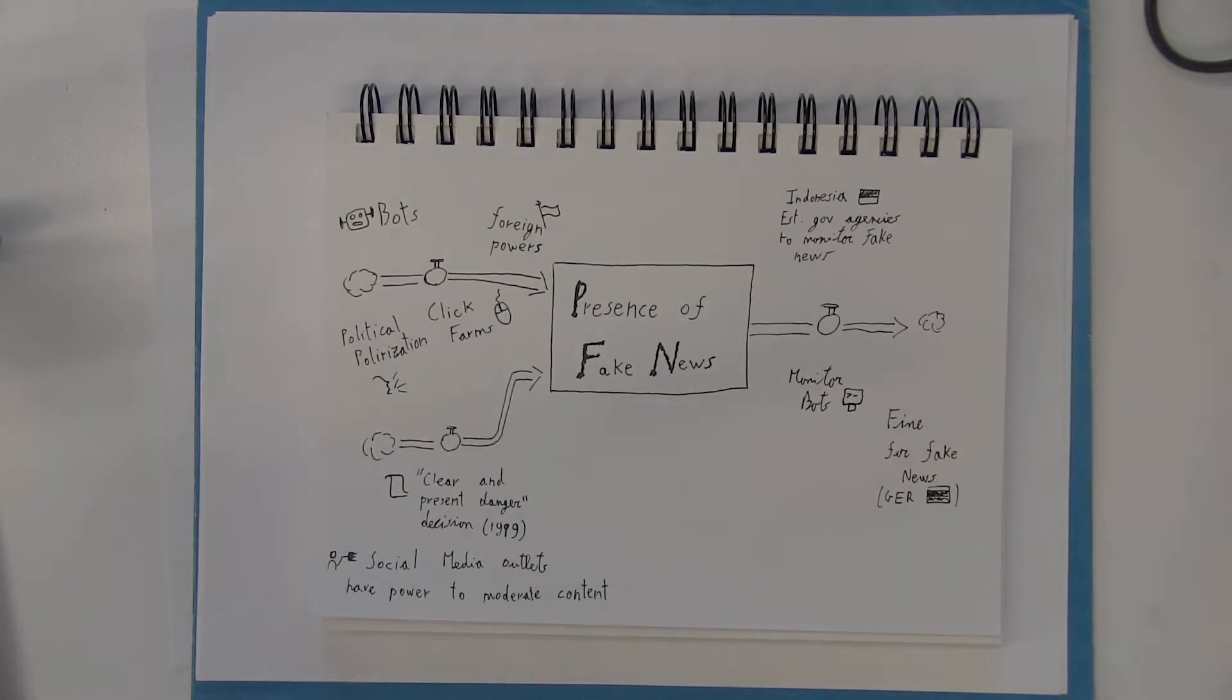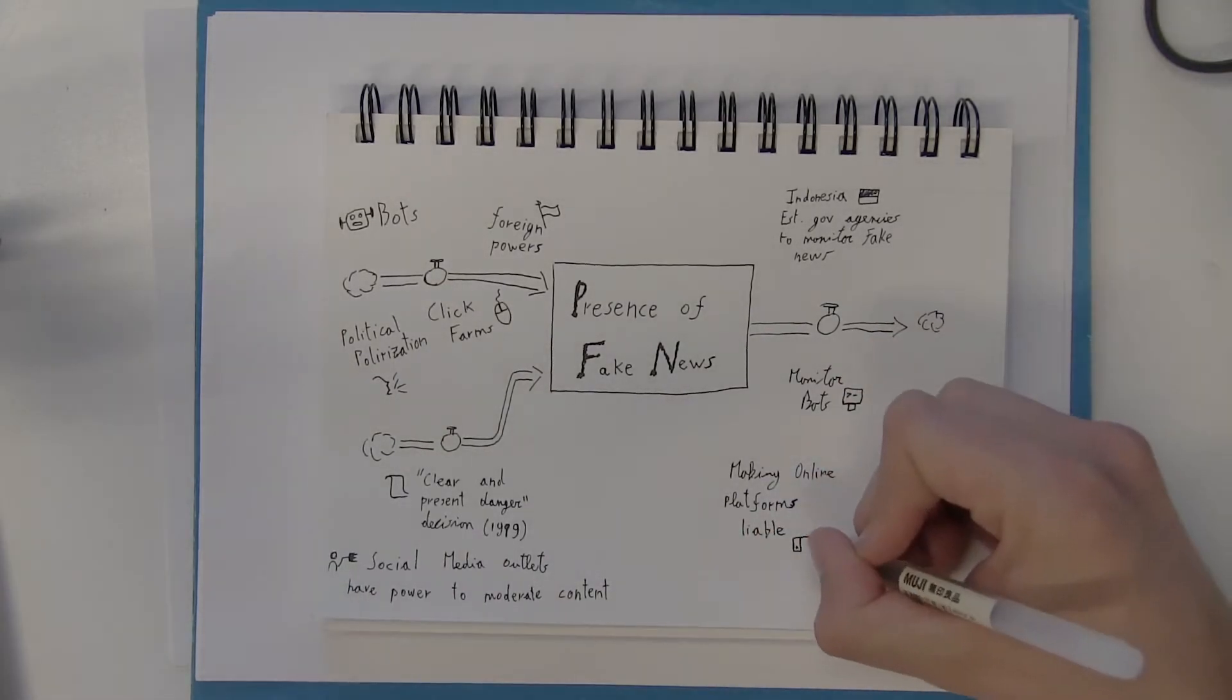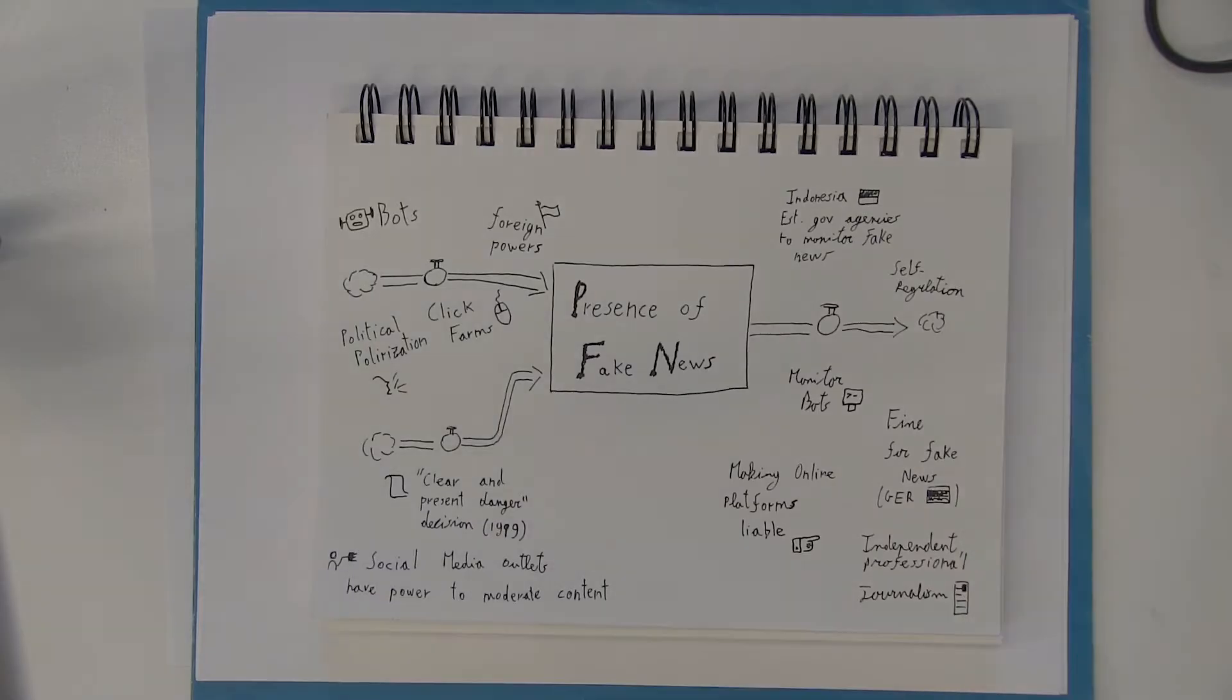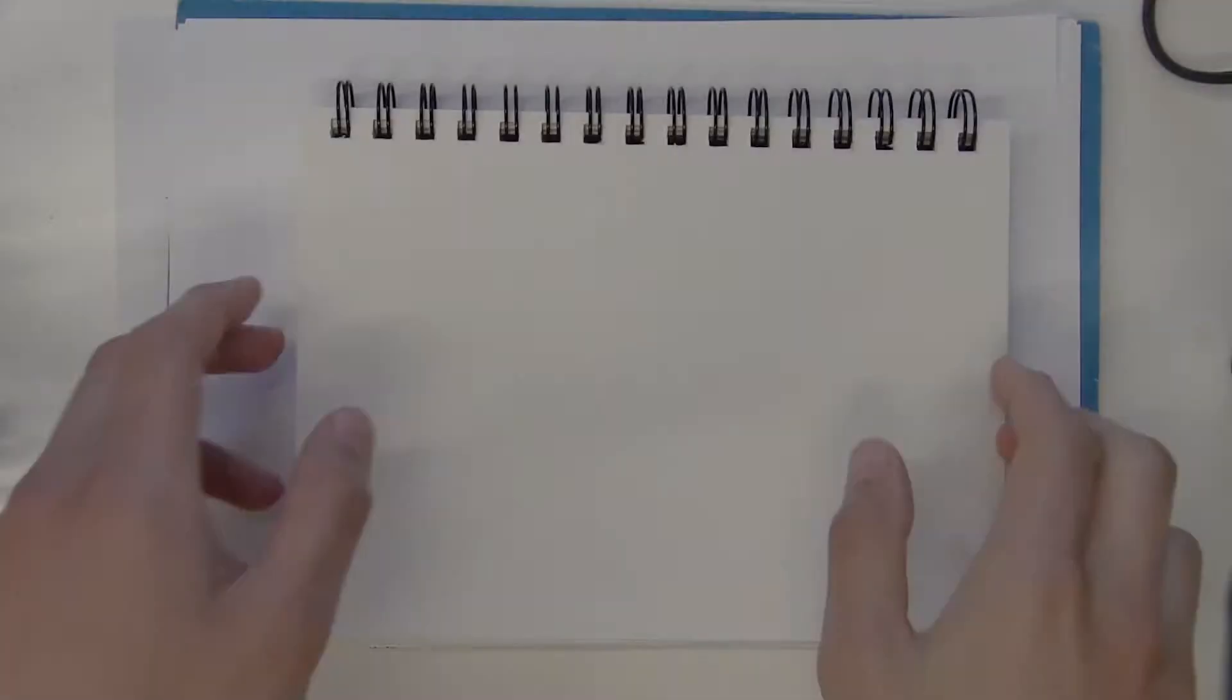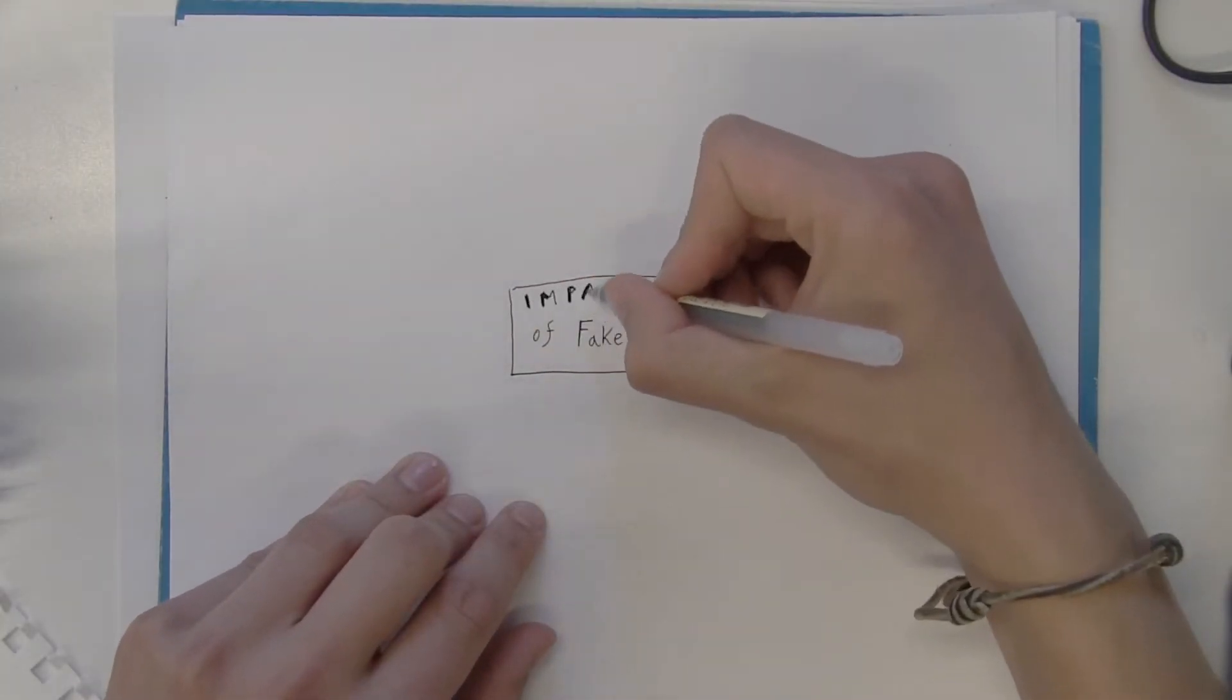Fake news is enabled by micro-targeting, social media institutions, and the trust that viewers have in the media they see, and it is diminished by government overseeing media publications and by creating a system for verification.